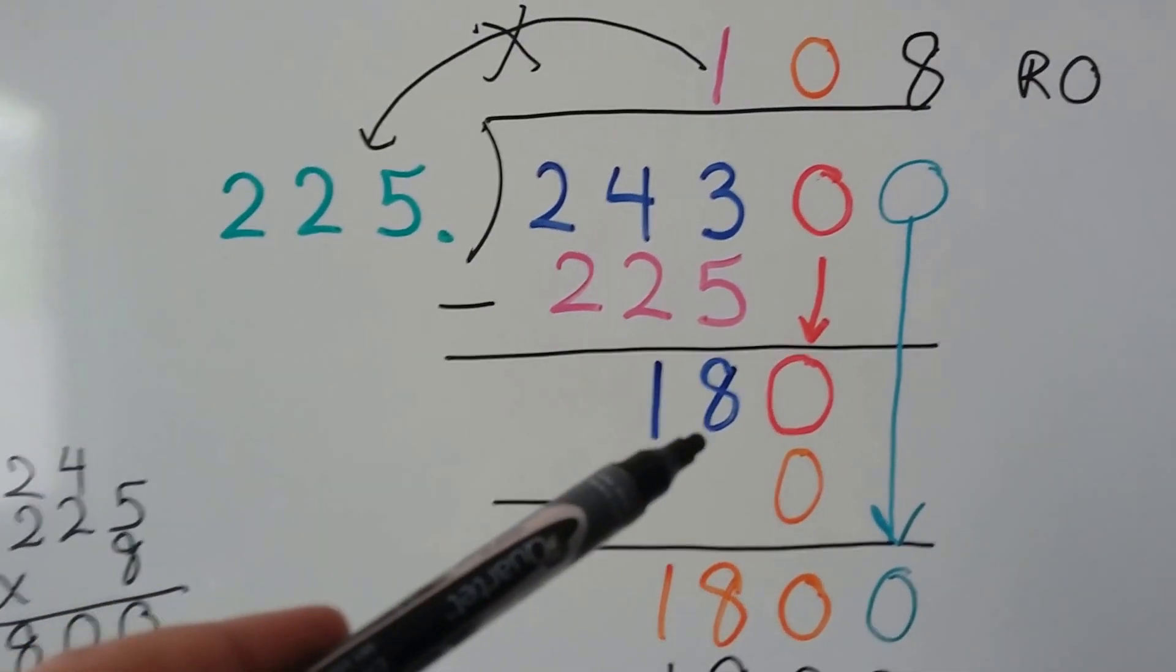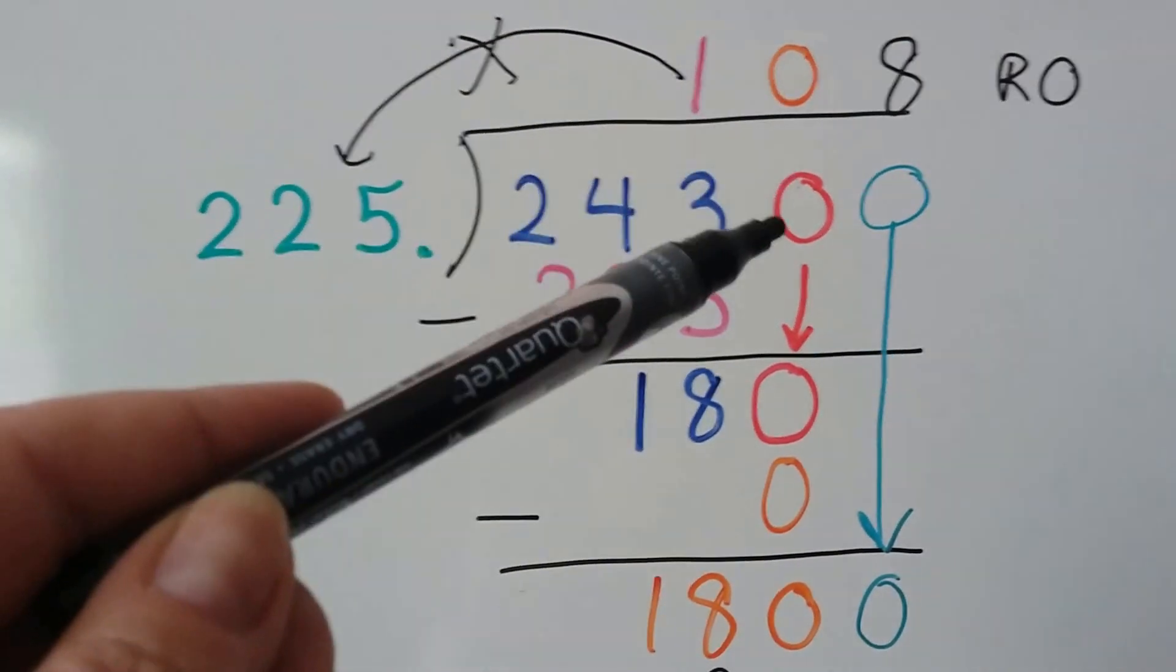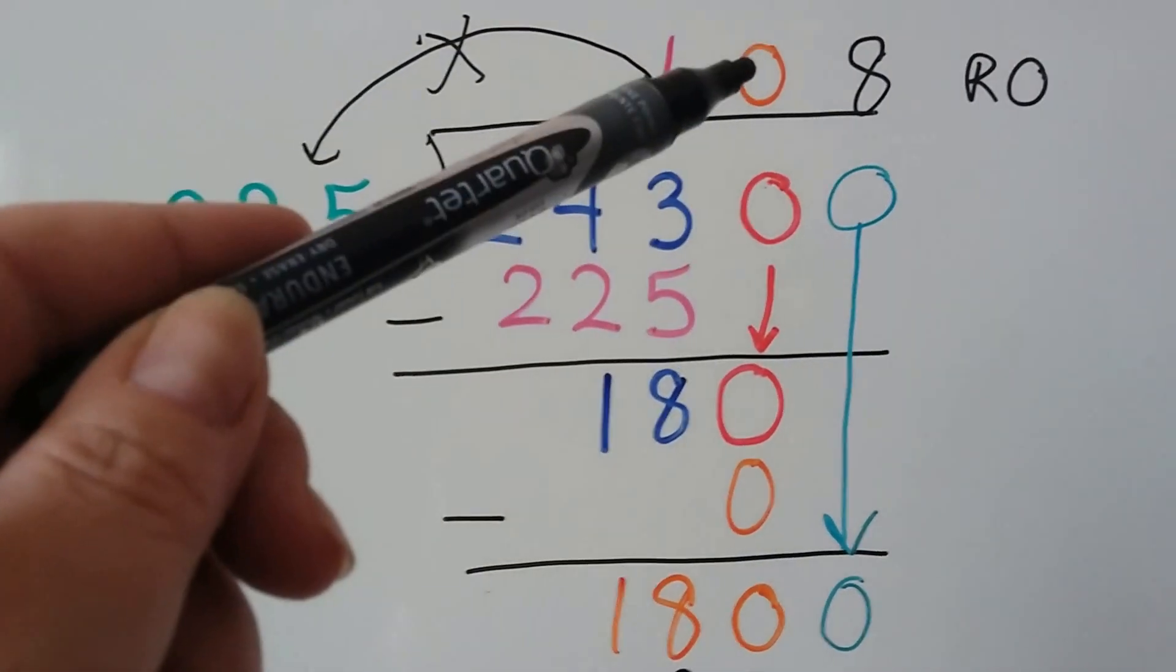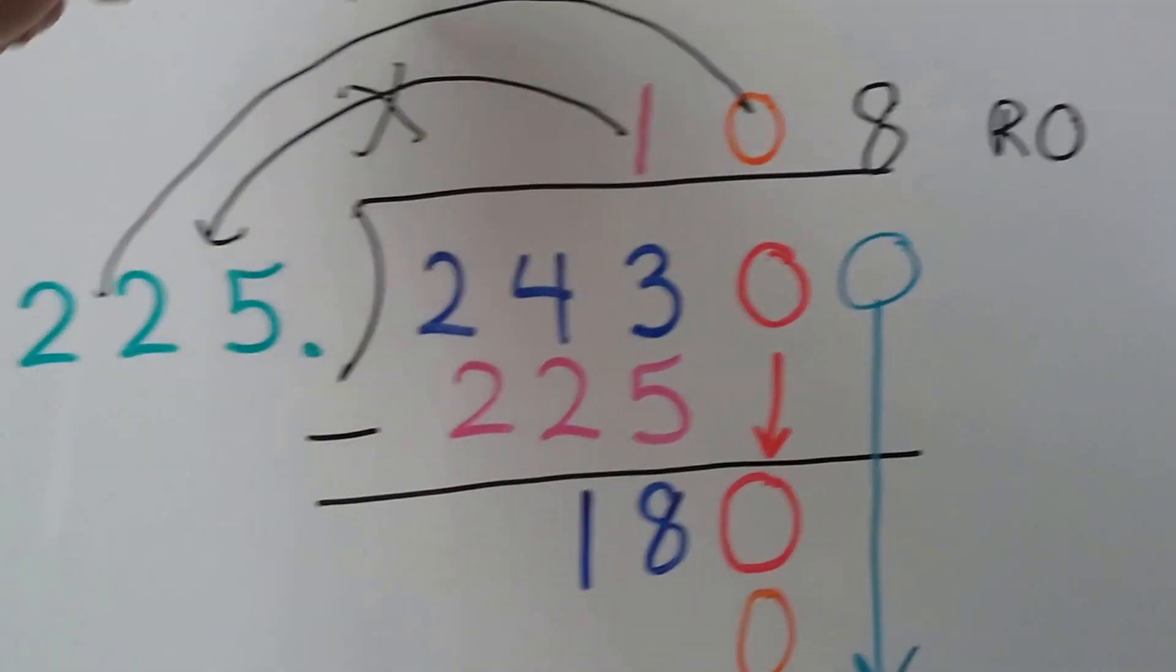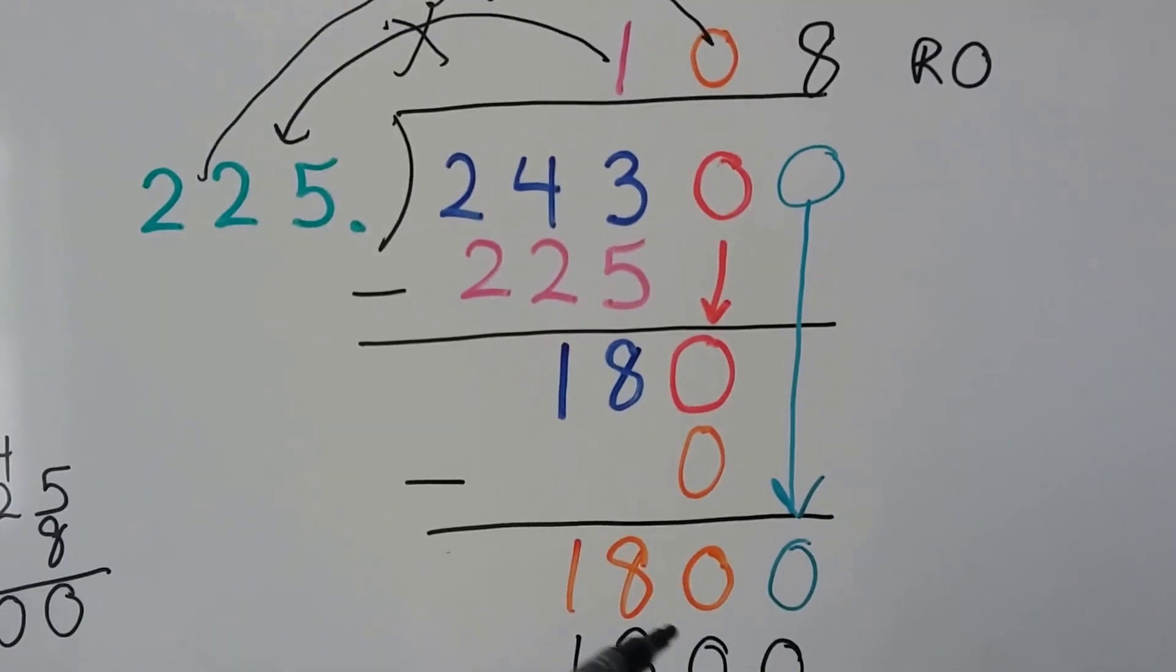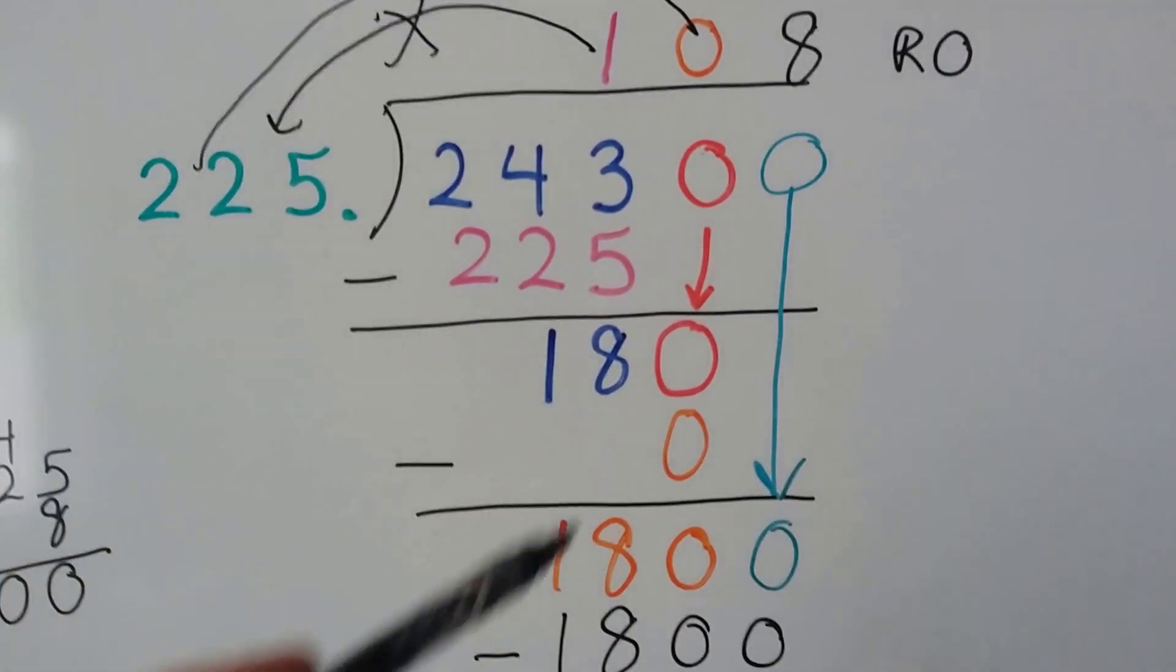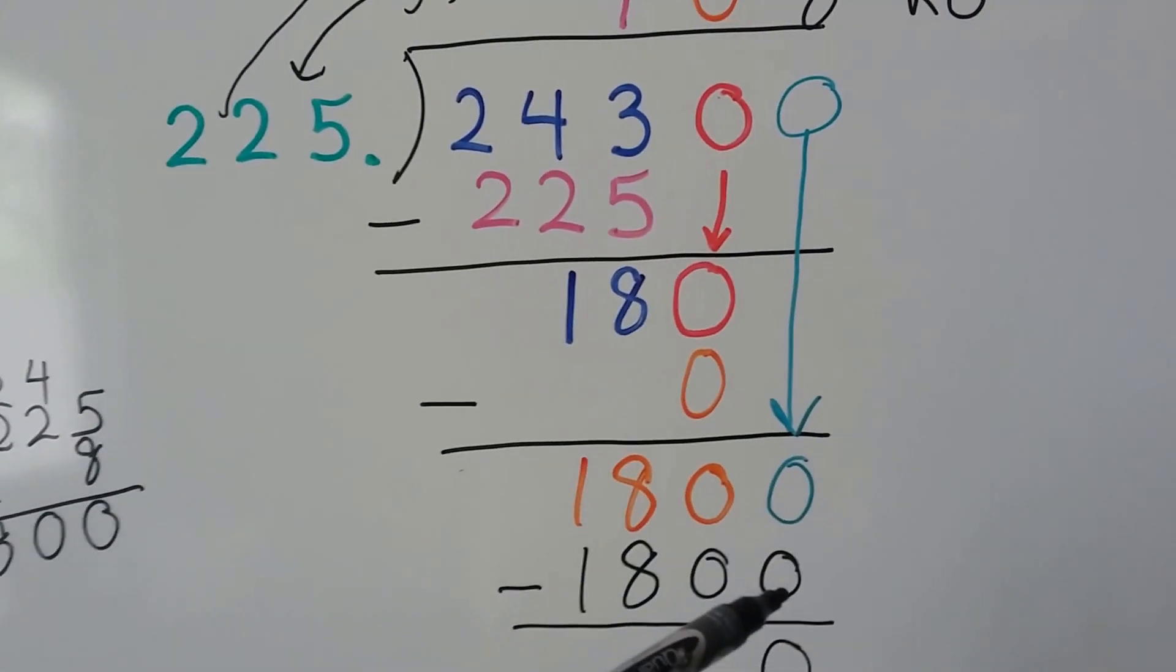225 can't go into 180. It goes in zero times. That's when we put the zero above the zero that we dropped down. Then we do zero times 225, and we get zero. We get 180 again when we subtract zero from it, and now it's this zero's turn to come down.